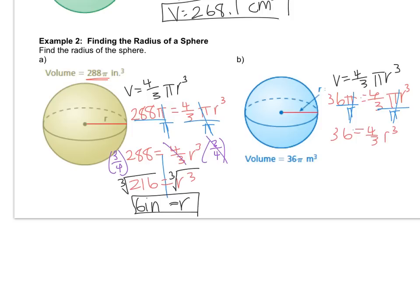You inverse the fraction by doing the reciprocal, so multiply both sides by 3/4, which is 27. And then you inverse the cube by doing the cube root. Remember, radicals and exponents are inverses of each other. So that gives me that the radius equals 3 and the label is meters.